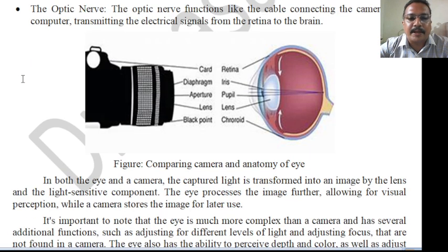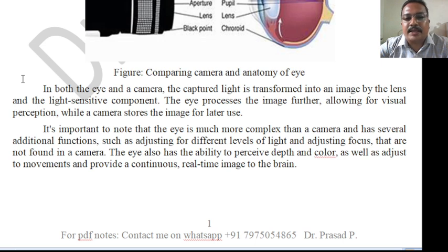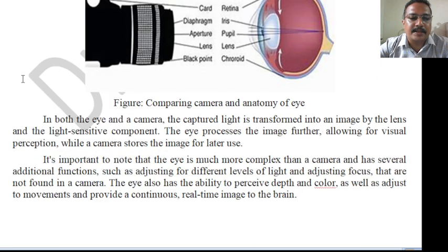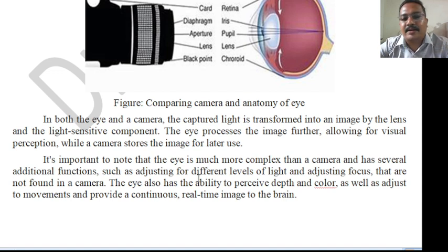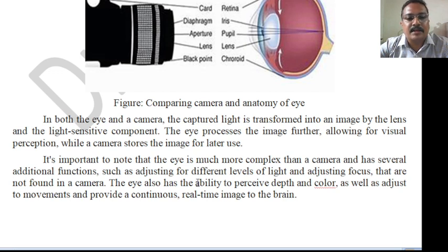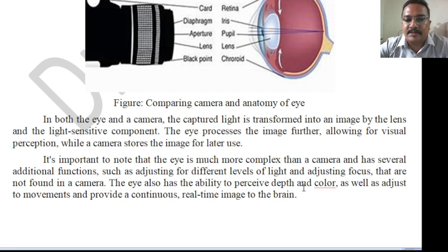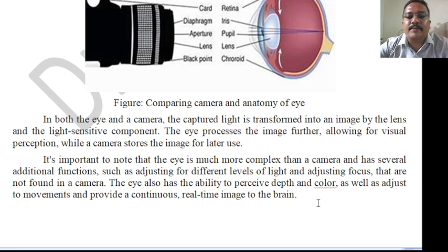In both the eye and camera, captured light is transformed into an image by the lens and the light-sensitive component. The eye processes the image further allowing for visual perception, while a camera stores the image for later use. It is important to note that the eye is far more complicated than a photo camera system, with additional functions such as adjusting for different light levels, focus, depth perception, color, and providing a continuous real-time image to the brain.